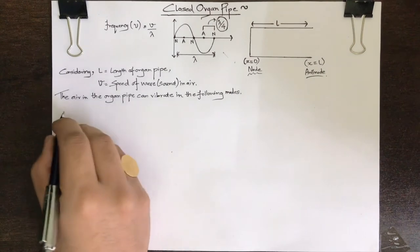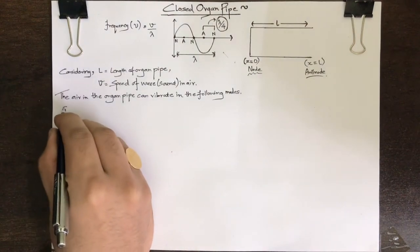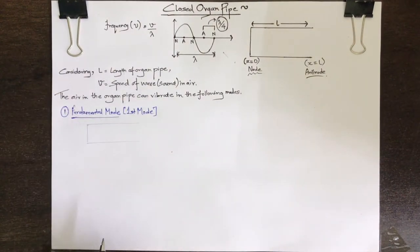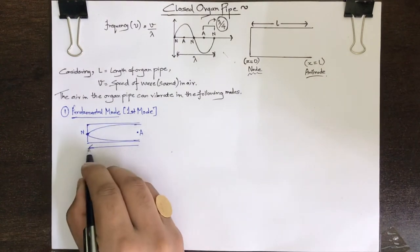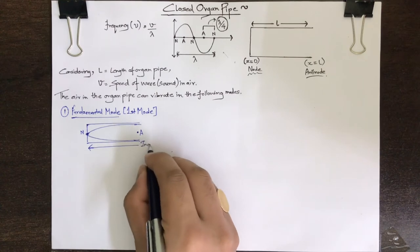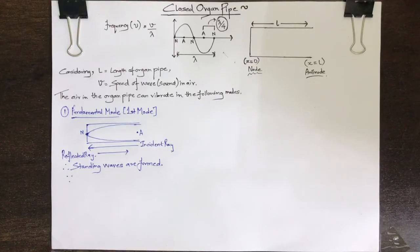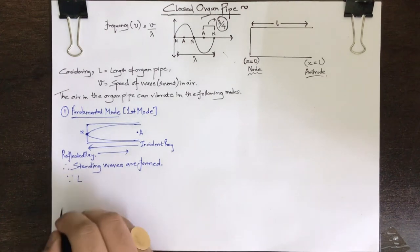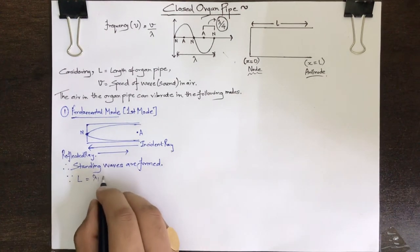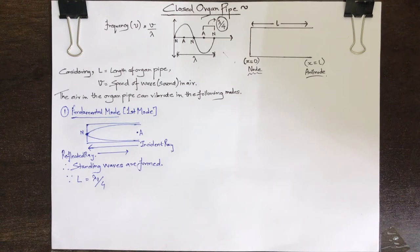First we have the fundamental mode, also called the first mode. Suppose the source produces an incident ray which after striking the closed end gets reflected back, so standing waves are formed. As the separation between two adjacent node and antinode is 1 by 4th of wavelength, the length of the considered organ pipe will be equal to lambda 1 by 4.